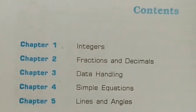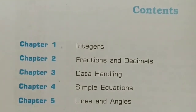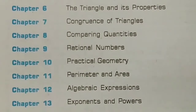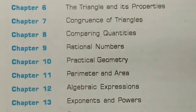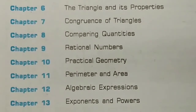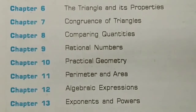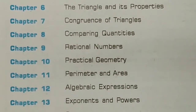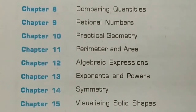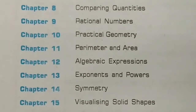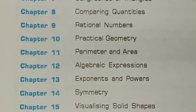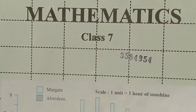Chapter 2 is Fractions and Decimals, Chapter 3 Data Handling, Chapter 4 Simple Equations, Chapter 5 Lines and Angles, Chapter 6 The Triangle and Its Properties, Chapter 7 Congruence of Triangles, Chapter 8 Comparing Quantities, Chapter 9 Rational Numbers, Chapter 10 Practical Geometry, Chapter 11 Perimeter and Area, Chapter 12 Algebraic Expressions, Chapter 13 Exponents and Powers, Chapter 14 Symmetry, and Chapter 15 Visualizing Solid Shapes. So students, there are a total of 15 chapters this year — this is our content.